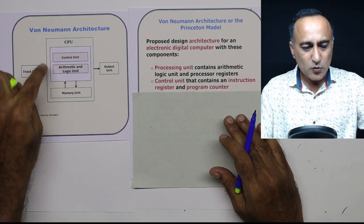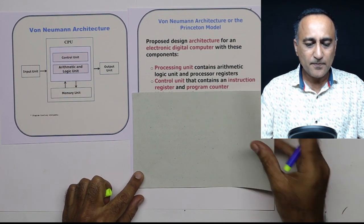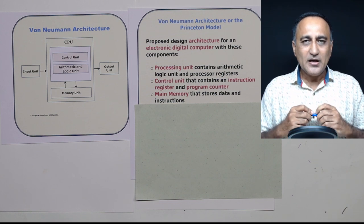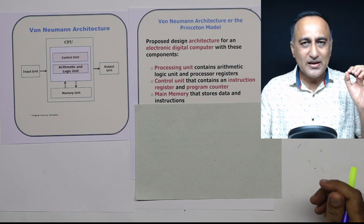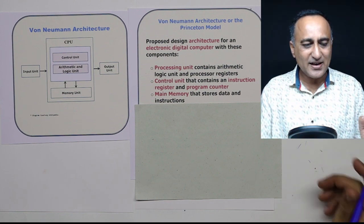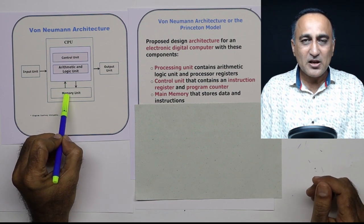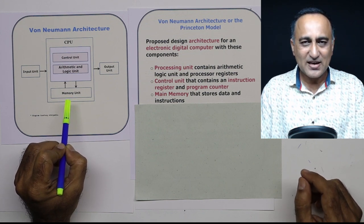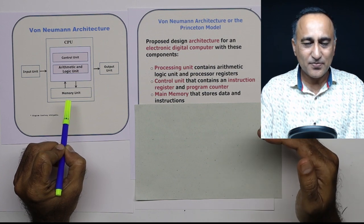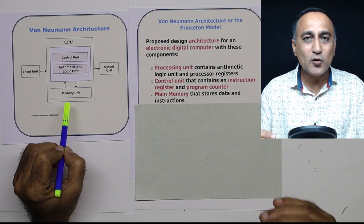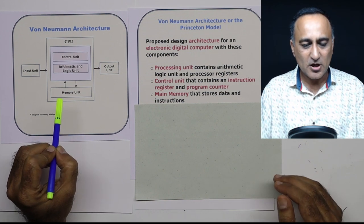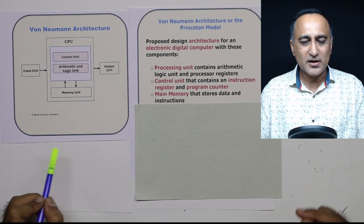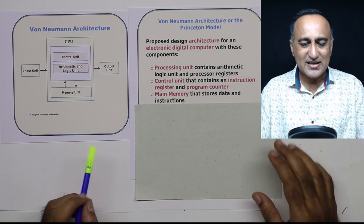Once the CPU was done being described by von Neumann, he went on to talk about the main memory. In his model, he said you should design an electronic computer such that the instructions and data should reside in the main memory, also called random access memory. Random access means you can directly or in a shortcut way go to that particular data or instruction. Main memory is used to store data or instructions, and in our next few lectures, we will talk about main memory as well as secondary memory.